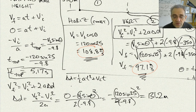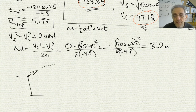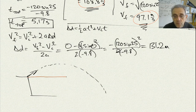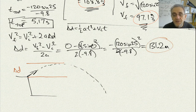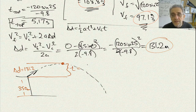So drawing this out: there's the cliff, the projectile goes up and comes back down. The distance from the launch point up to the maximum height is 131.2 meters, and the time to reach that top location was 5.17 seconds. The cliff itself is already 350 meters high — that didn't factor into part 1.